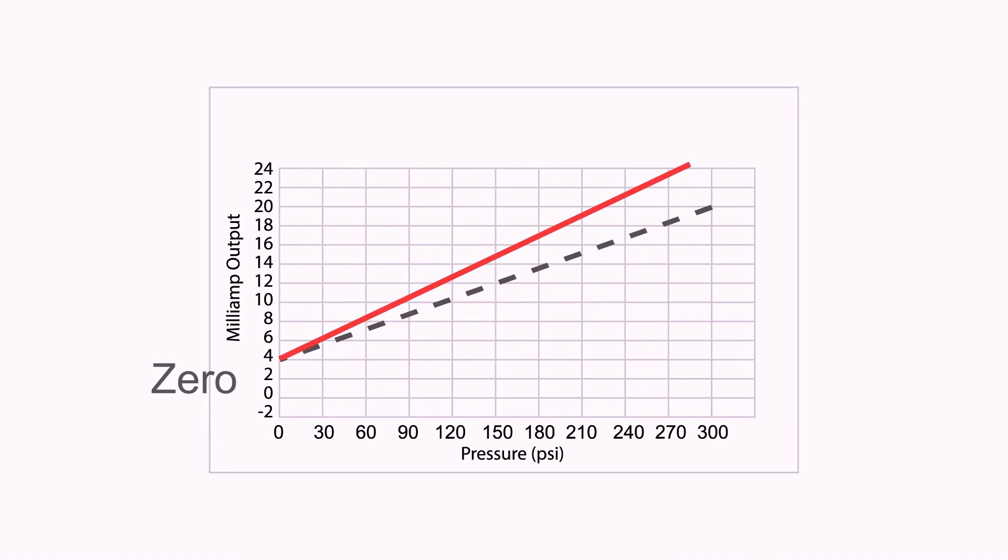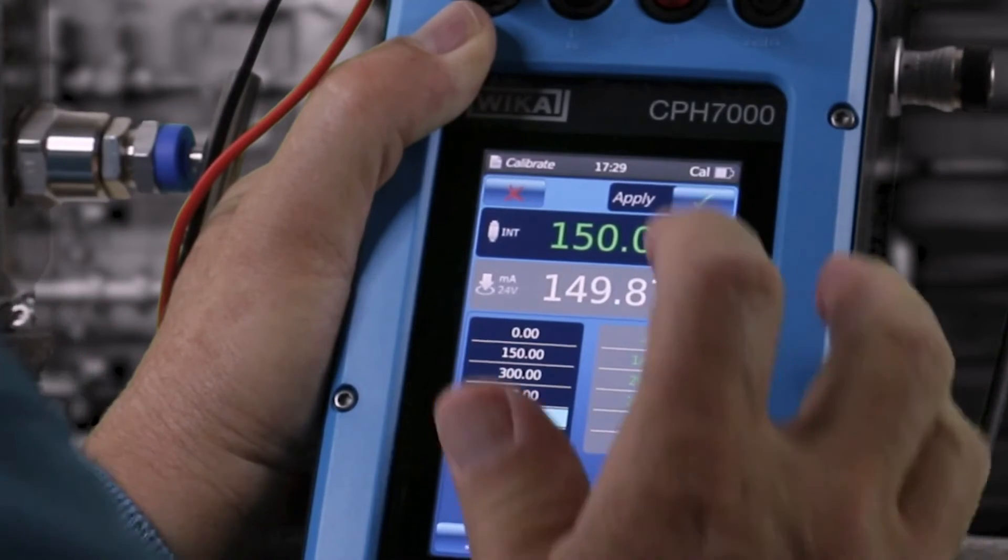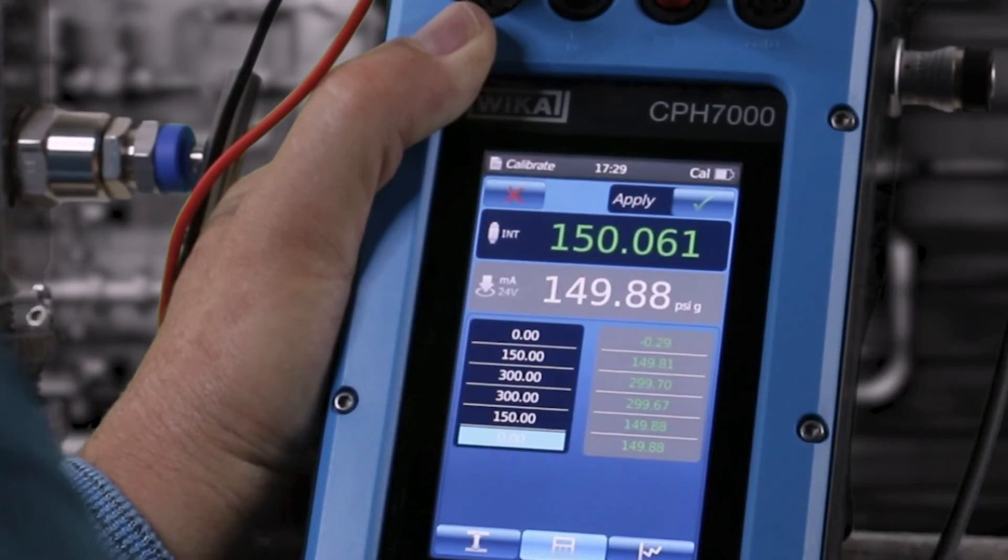If the calibration fails, then adjustments should be made to the zero and span of the transmitter to bring it within specification, and then calibrate again. The second calibration will be your as left calibration.